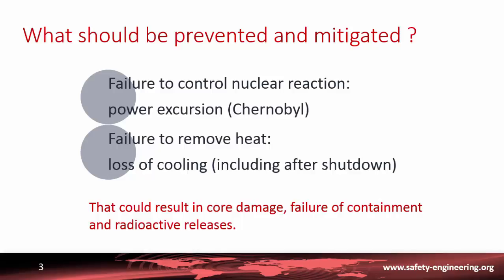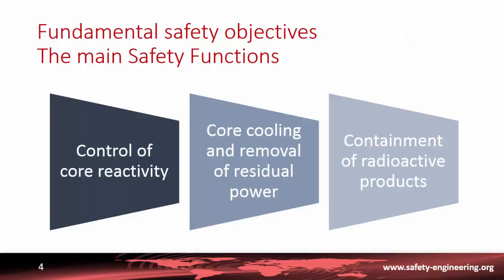We should avoid the failure to control the nuclear reaction to avoid the kind of power excursions that occurred at Chernobyl, and failure to remove the heat. For instance, the loss of cooling of the reactor is something essential not only during operation but also after shutdown.